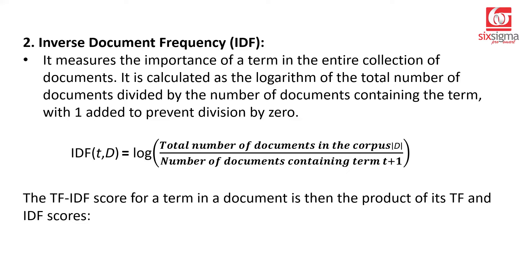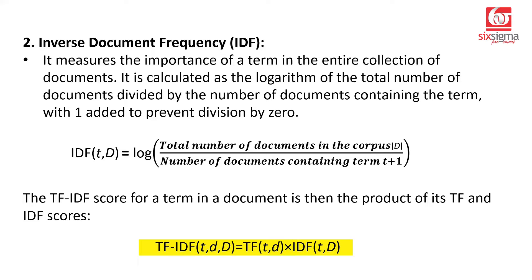The TF-IDF score is the product of the TF and IDF values. You first calculate TF, then calculate IDF, and multiply them together. Let's see this with the help of an example, which will make it clearer.